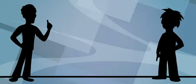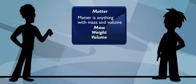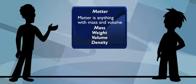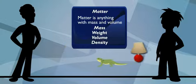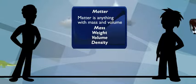It matters to matter. Mass, weight, volume, density—they're all properties of matter. Matter is the stuff all around us. Solids, liquids, gases, and all of it has mass and volume.